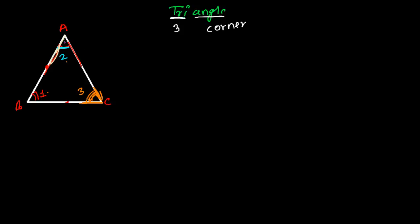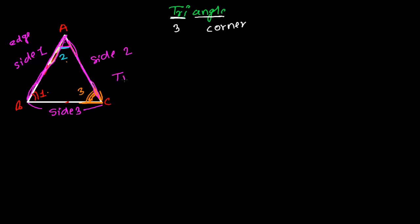We generally see AB as a line segment, but in a triangle we refer to them as sides — or 'edges' as some people say. This is side 1, this is side 2, and BC is my third side. So we can say that a figure having three corners, three sides, and forming a closed shape is called a triangle.